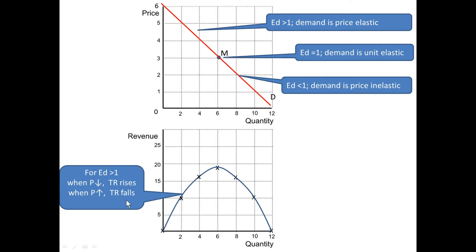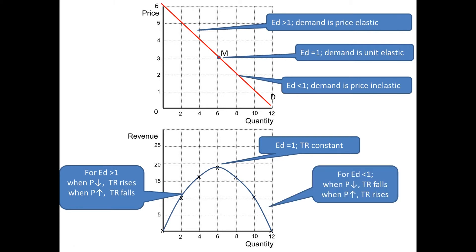When we reach the midpoint, the revenue curve peaks out at $18 of revenue, and so total revenue is constant. Whereas, when we move to the right of M, then demand is price inelastic, and when price falls, we move down in this direction, then total revenue falls.